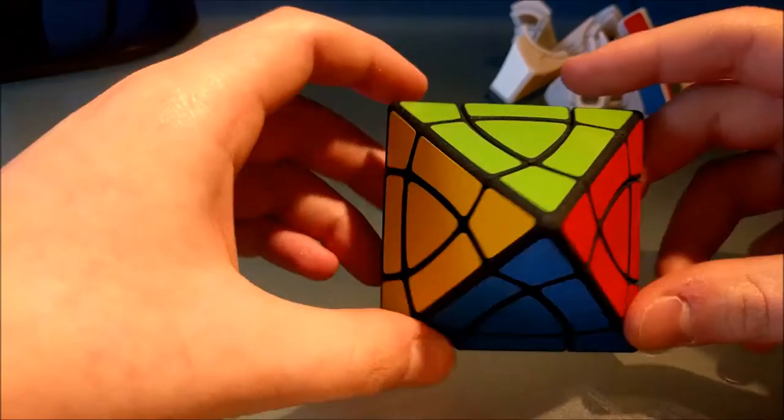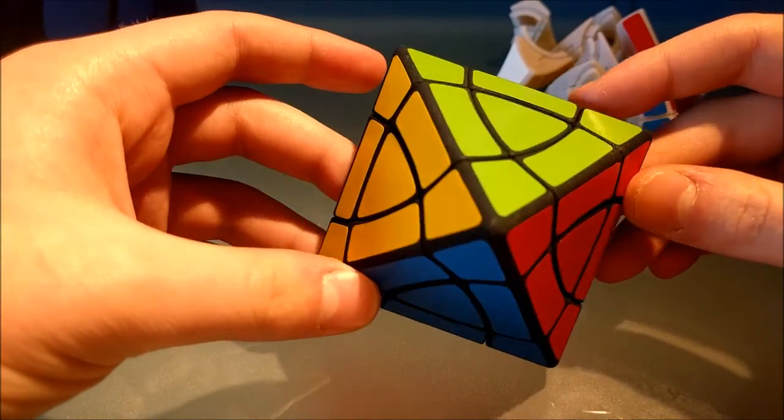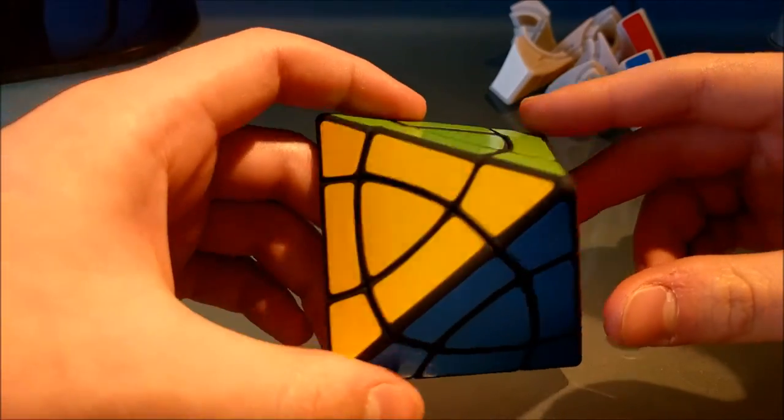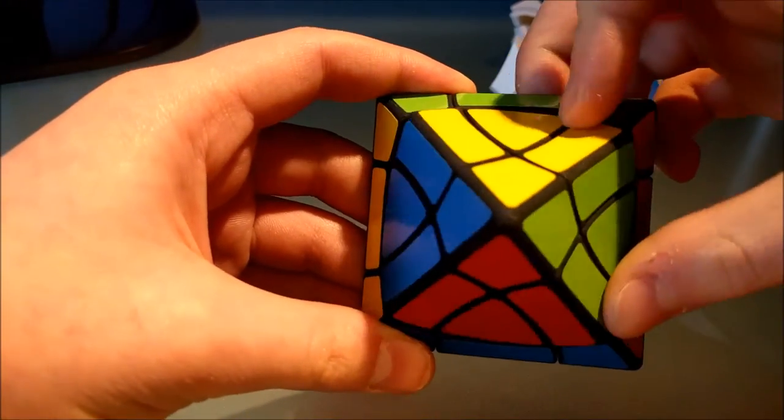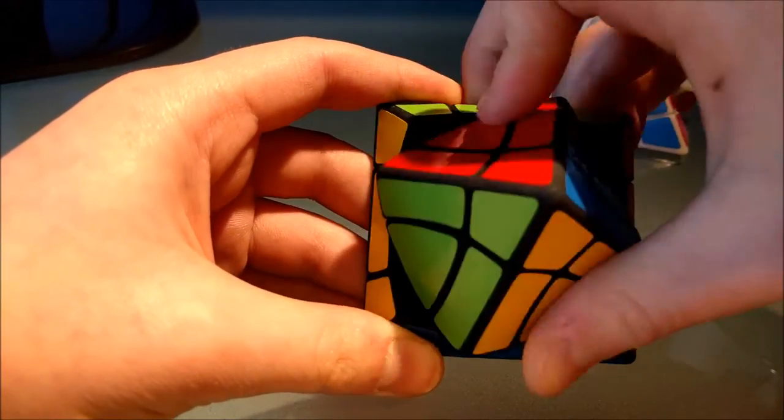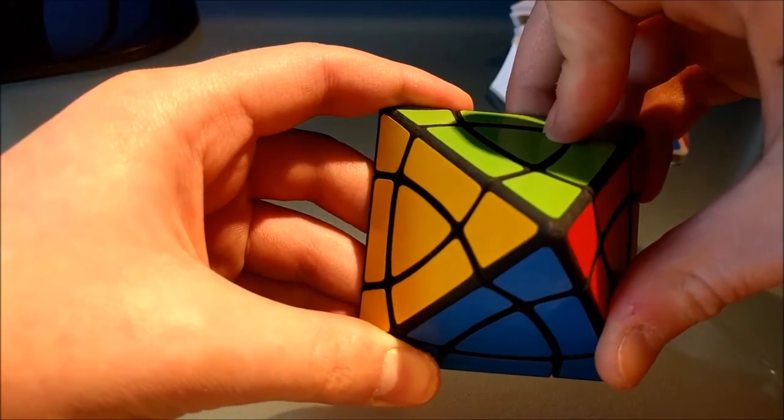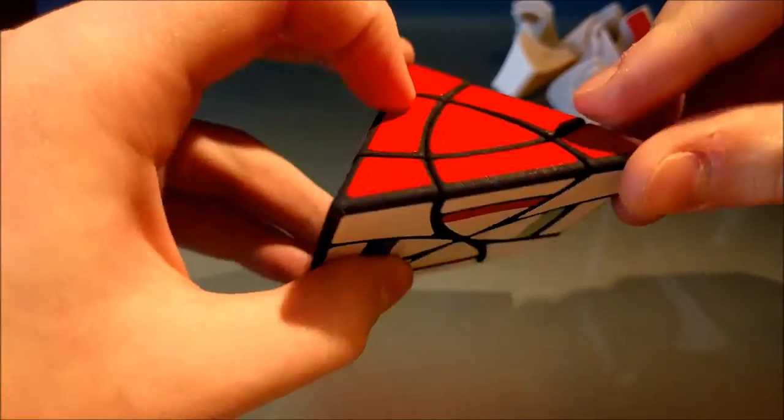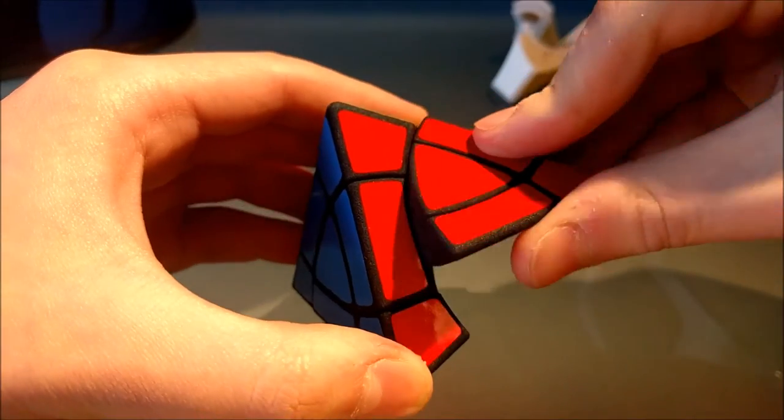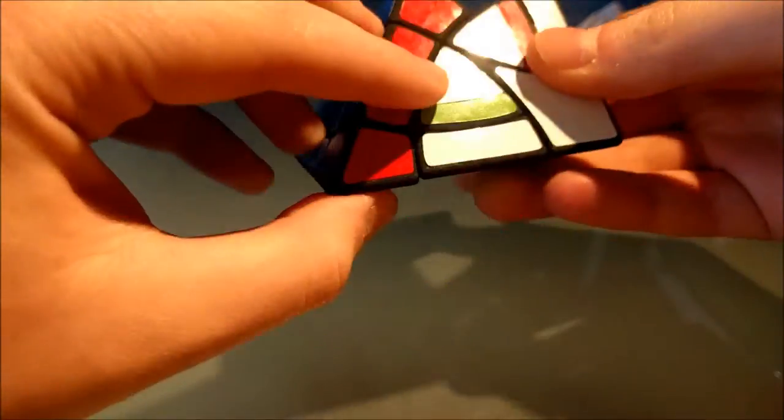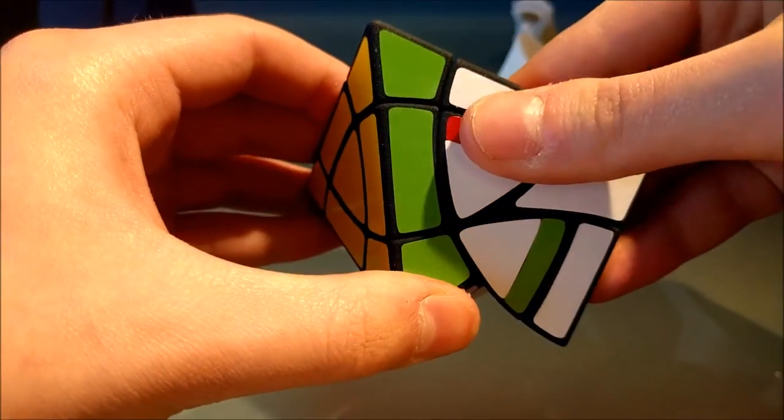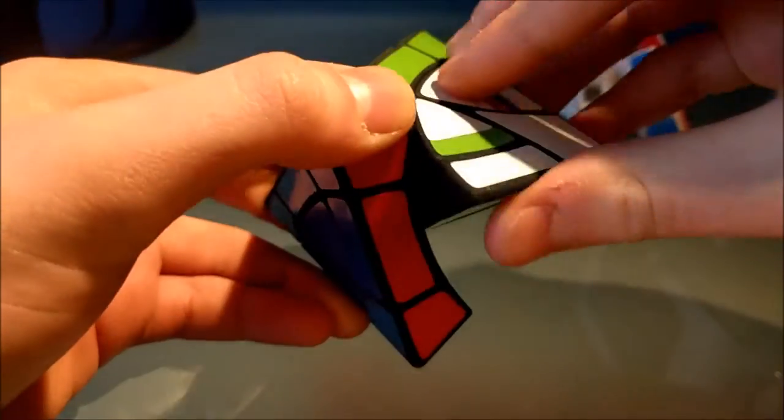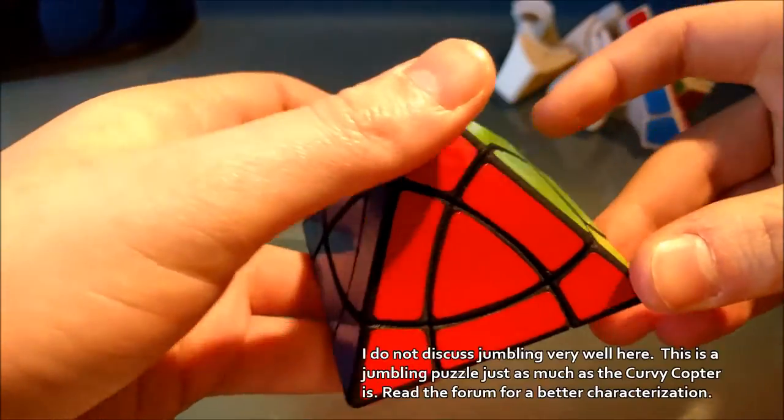Now, this puzzle right here, as I said, it's a corner-turning square pyramid, I believe the first of its kind. So there's the top corner, which turns in rotational symmetry of four, and then there are the bottom corners, and they all turn, they have three different stops. So they have this stop right here, where this can turn again, there's this stop right here, where this can turn again, and then there's the base position.